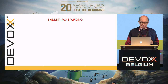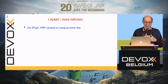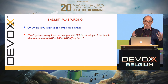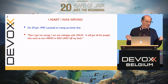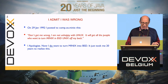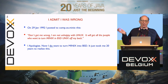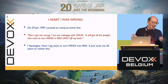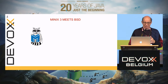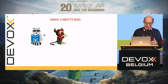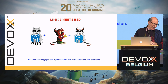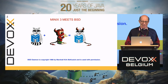I'll admit that I was wrong about something I said a long time ago. Back in 1992 I had a post to the MINIX newsgroup, just after Linus announced Linux on the MINIX newsgroup, saying: don't get me wrong, I'm not unhappy with Linux — it will get all the people who want to turn MINIX into BSD Unix off my back. There were many people early on who wanted to turn MINIX into BSD, and I was against that because it would require a more complicated system and students couldn't afford the hardware. So now, actually, I do want to turn MINIX into BSD — it just took me 20 years to realize that.